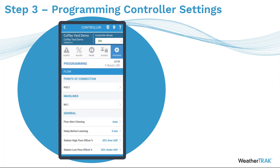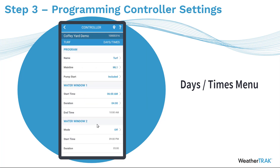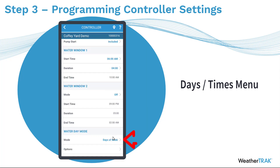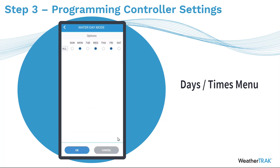Once you've got all your flow set up, you can choose to either start the learn flow test from the WeatherTrack panel or continue on and do all of your station programming. Once your point of connection is set up, scroll down to Days and Times to tell the controller when irrigation is allowed — specifically what time irrigation should start and the duration of the available water window. Scroll to the bottom to see the water day mode, where you can select what water days are available.